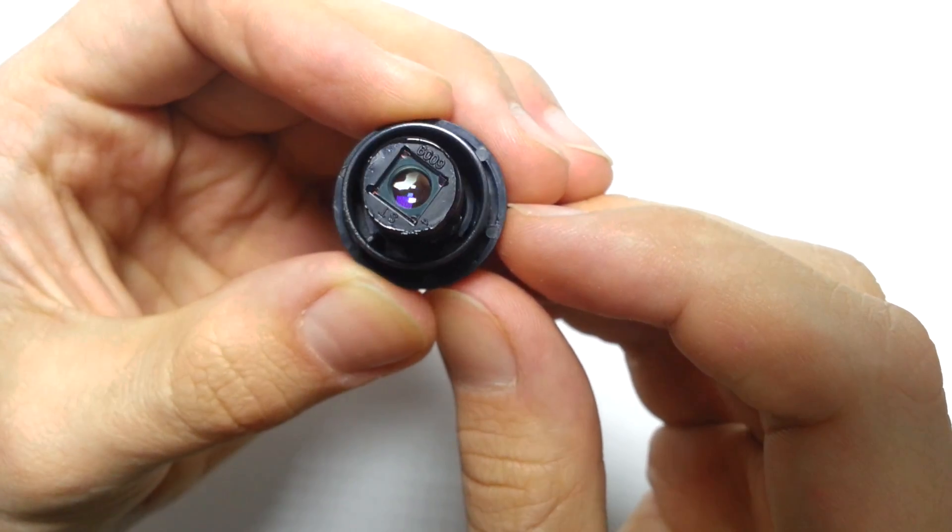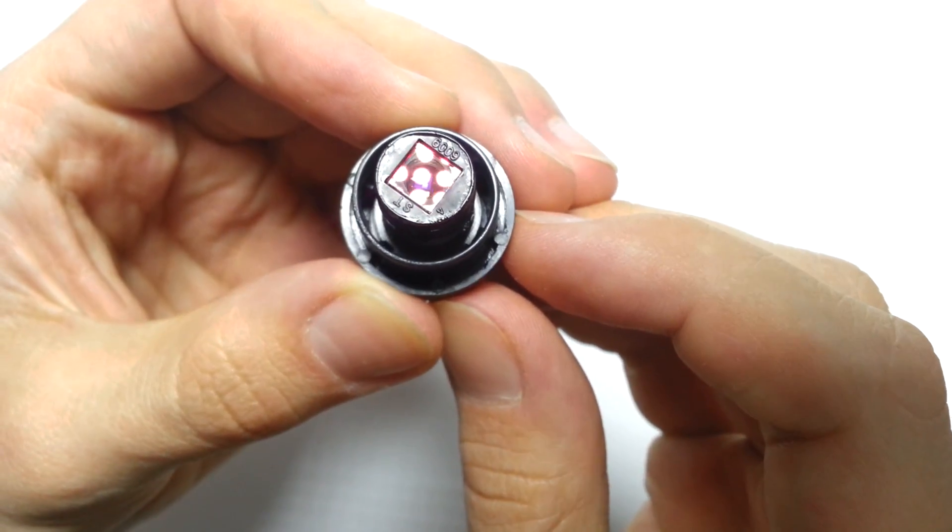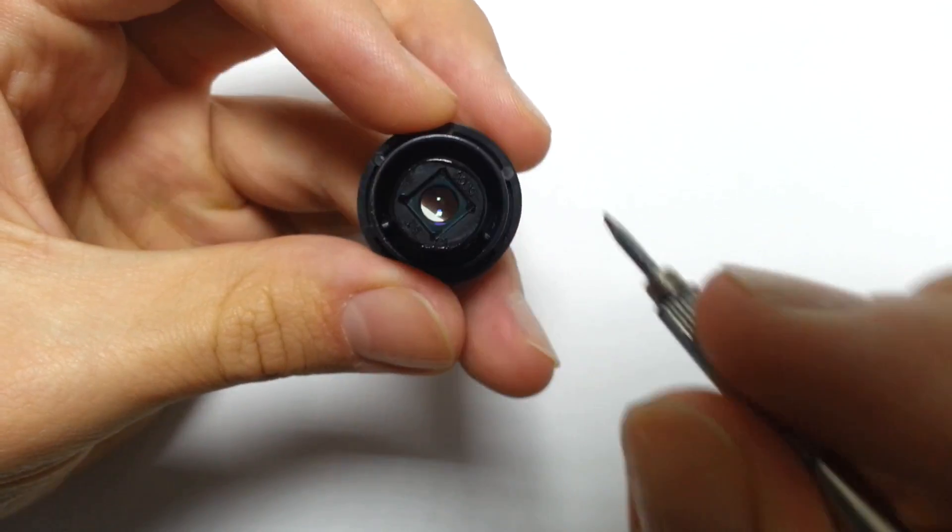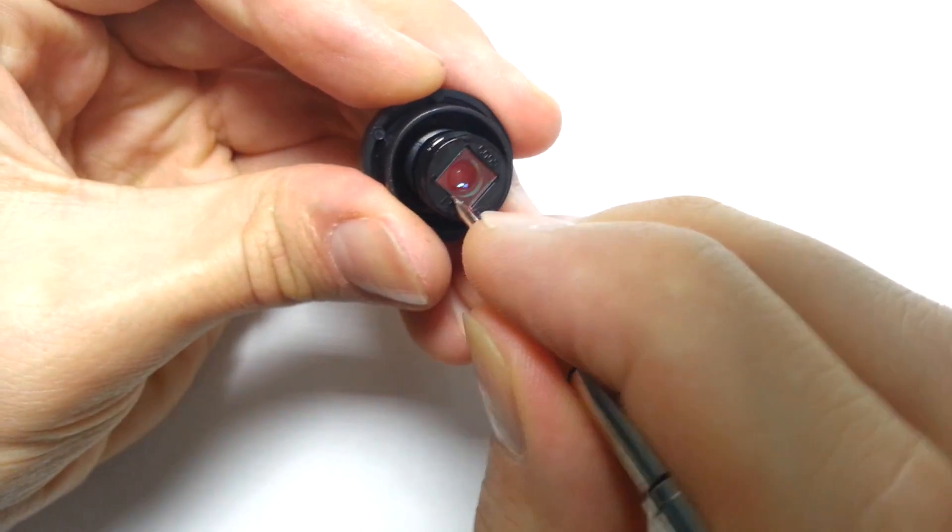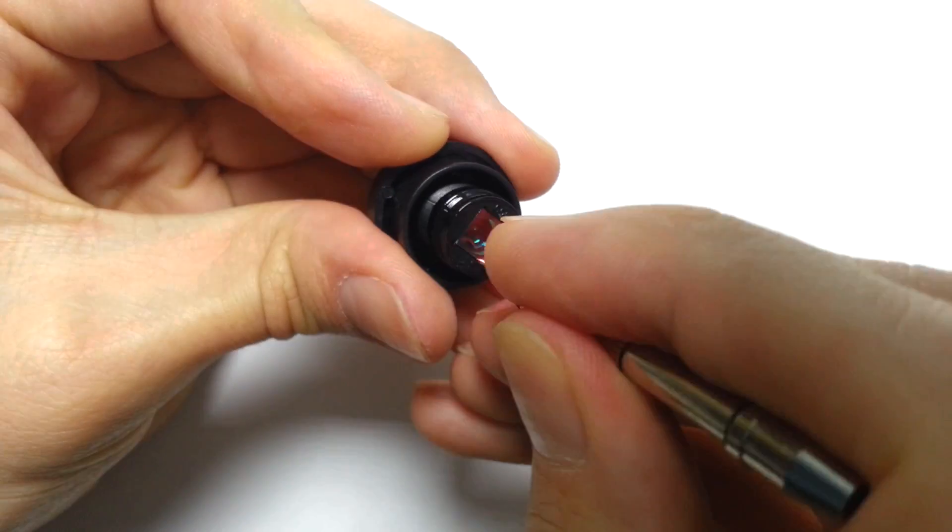This piece of glass on top is infrared filter, and it doesn't allow infrared light go through. And now I'm going to remove it, and I'll show you what cool things are possible to see without such filter.